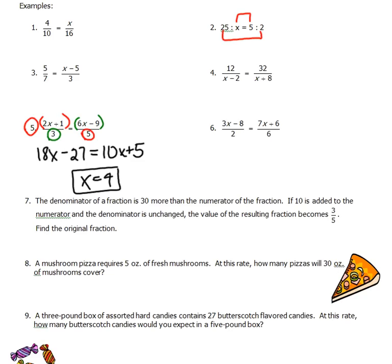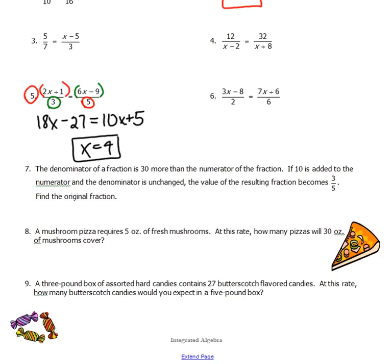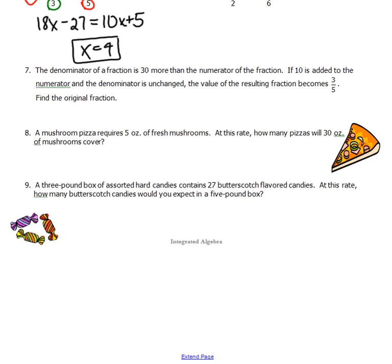All right, that's pretty straightforward. I'll do number eight. A mushroom pizza requires five ounces of fresh mushrooms. At this rate, how many pizzas will 30 ounces cover? The key thing with proportions is to set up a word example.